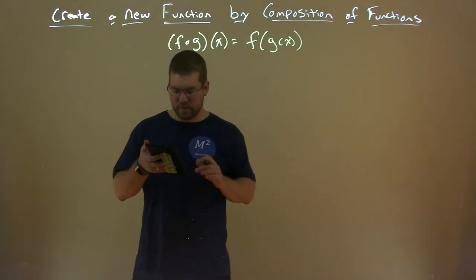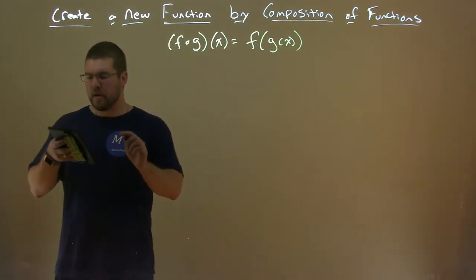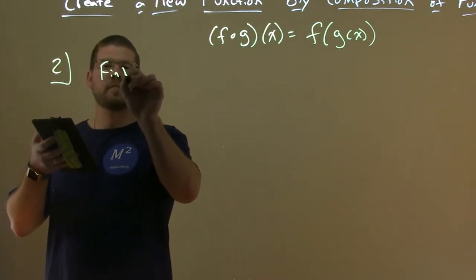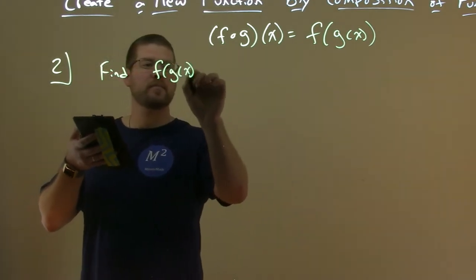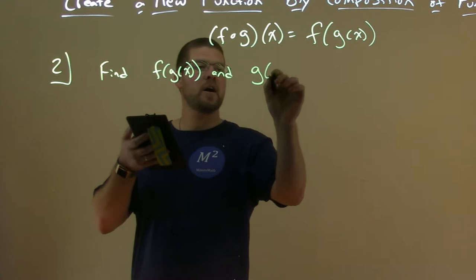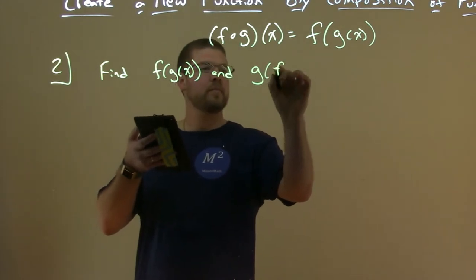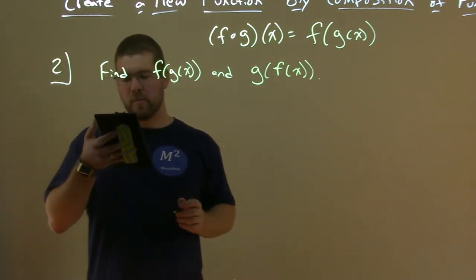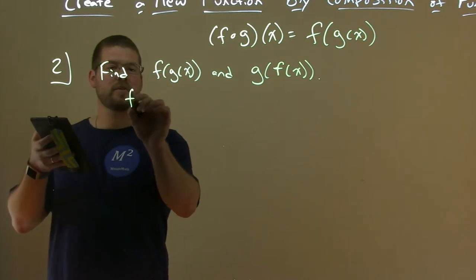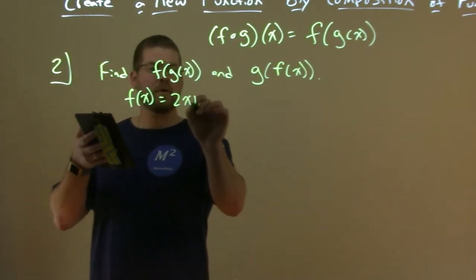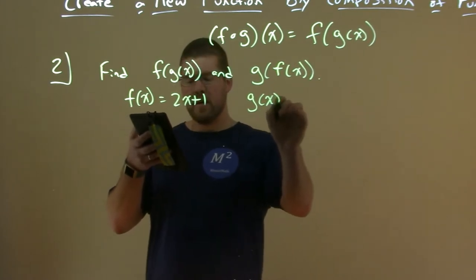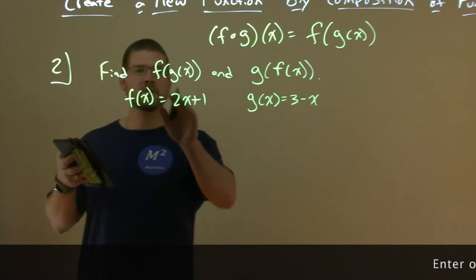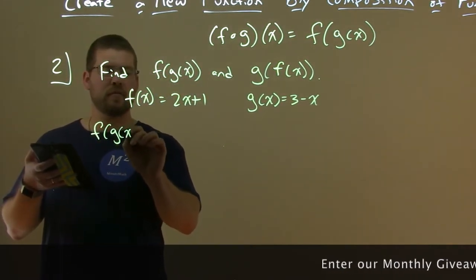So let's get into an example here. Using provided functions, we want to find f of g of x and g of f of x, and we'll determine if the compositional function is commutative. We'll start with: f of x is equal to 2x plus 1, and g of x is equal to 3 minus x.